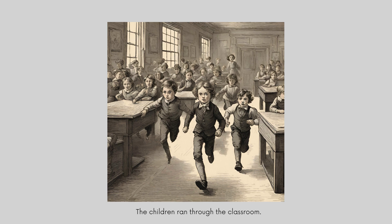First, here's picture one and the sentence is: the children ran through the classroom. The generated image depicts a group of children running through a classroom, but they're shown with neutral expressions and closed mouths. They seem to be moving at a moderate pace. The classroom environment appears relatively calm and orderly — the desks and chairs are neatly arranged, and the children are avoiding obstacles as they move.